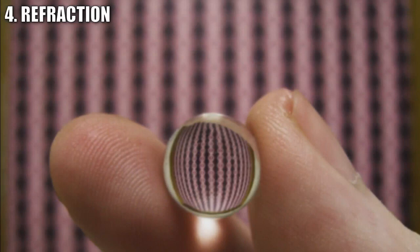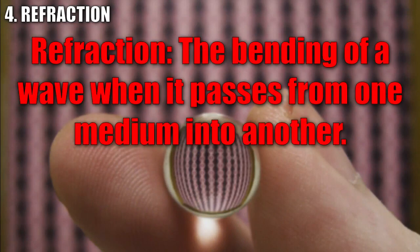This property of waves is called refraction. Simply put, refraction is the bending of a wave when it passes from one medium into another. Remember, this is different from diffraction, because in diffraction, the wave bends around the barrier. In refraction, it bends through it. Diffraction takes place in one medium. Refraction is when the wave changes mediums.